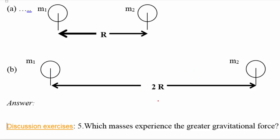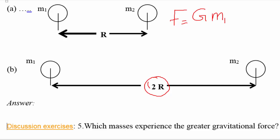So now instead of r it's 2r. How would the force of gravity change? Since we change the distance to 2r, the force of gravity F will be G — where G is a constant called the gravitational constant, a very small value — times the mass of the first object times the mass of the second object.